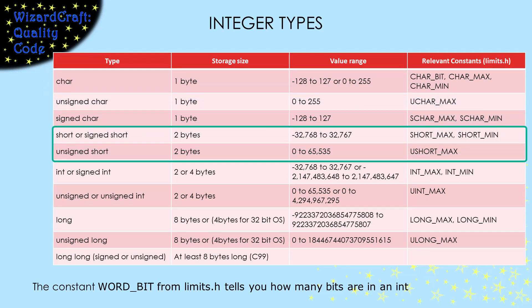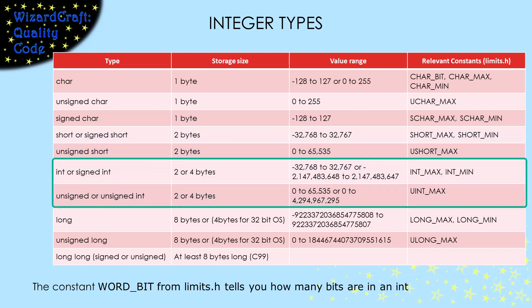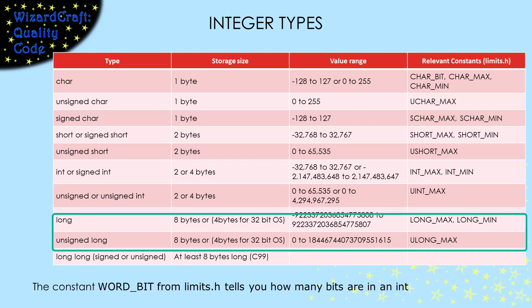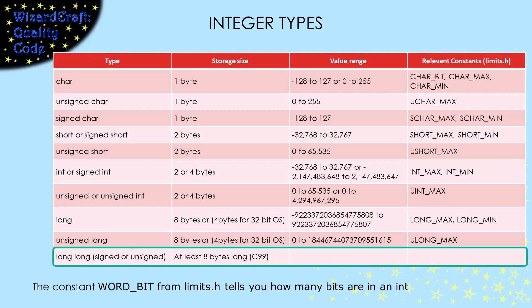The type short is two bytes long and defaults to signed — it's just like a char, only bigger. After that, things get a little inconsistent. The size of int and long variables depends on your underlying architecture. The size of an int is the size of a word in the memory of your machine — it can be either 16 or 32 bits long. You can use the constant WORD_BIT from limits.h to tell you how many bits are in an int. The size of a long is always twice the size of an int. And then, in C99, they added long long, which is guaranteed to be at least 64 bits long.